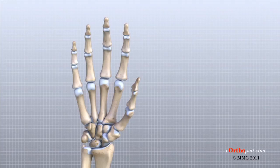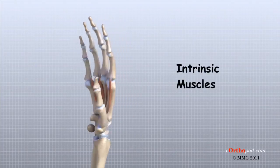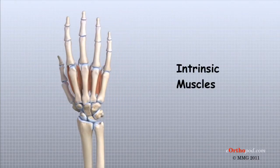The smallest muscles that originate in the wrist and hand are called the intrinsic muscles. The intrinsic muscles guide the fine motions of the fingers by getting the fingers positioned and holding them steady during hand activities.